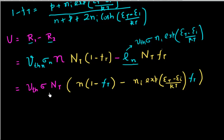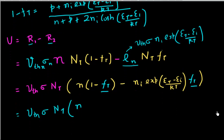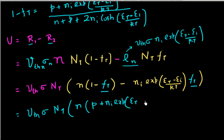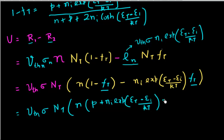I take the common terms out and get this expression. All I need to do is substitute for Ft. When I do that, I get these common terms and then n times (1 minus Ft). I already derived the formula for that, so I get n times (p plus Ni·exp((Et minus Ei)/kT)), and from over here I get Ni·exp((Et minus Ei)/kT).